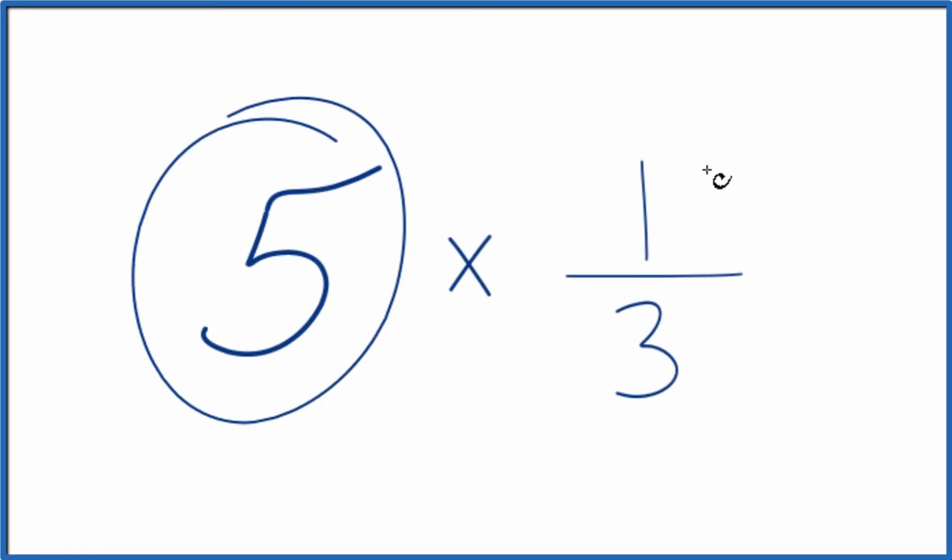Let's multiply 5 times 1 third. Here's how we could do it. You could just add 1 third together 5 times, and that would give you 5 times 1 third.